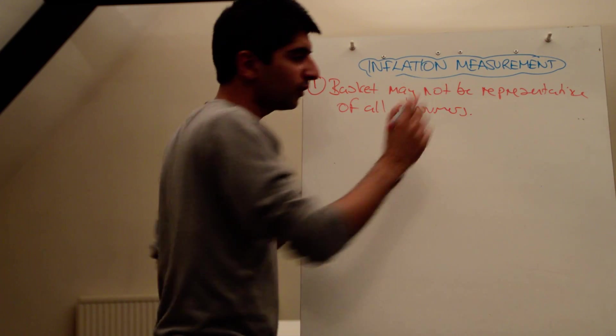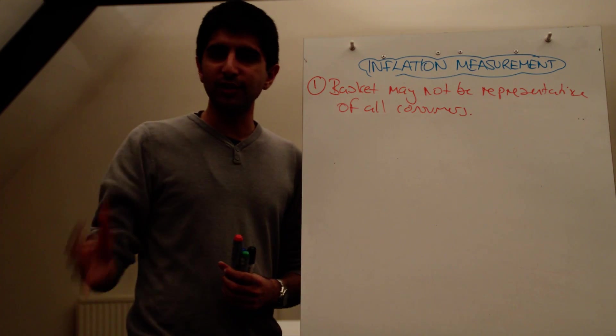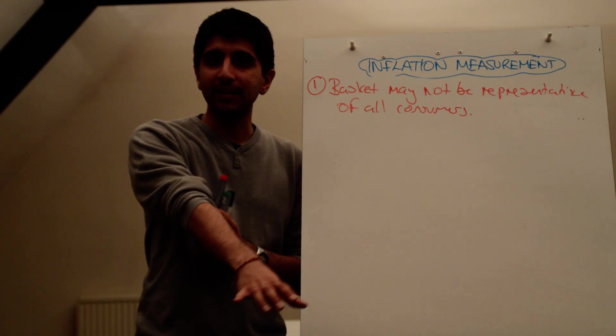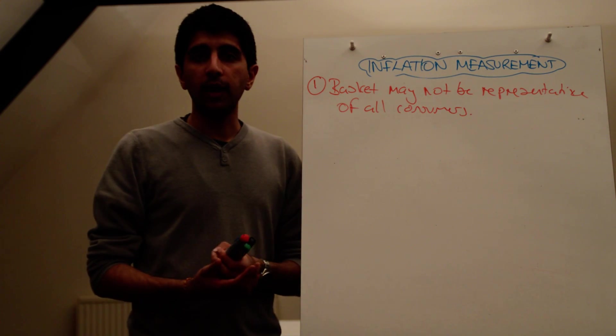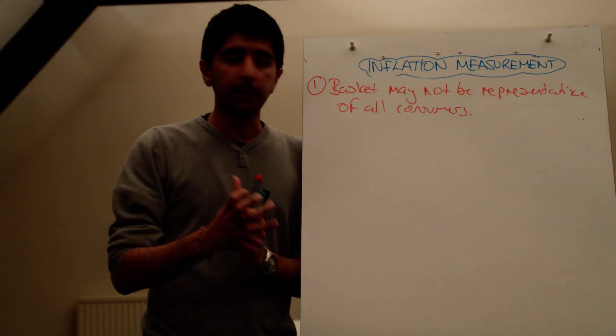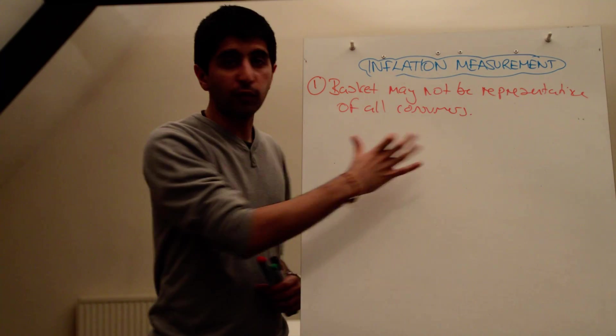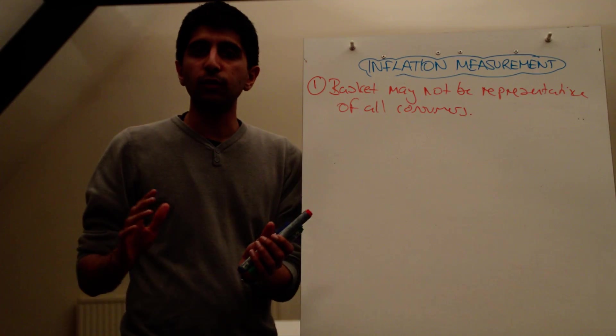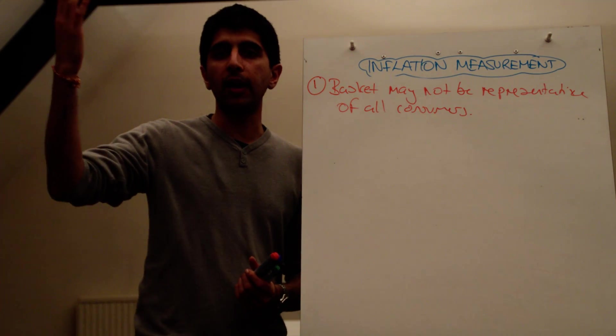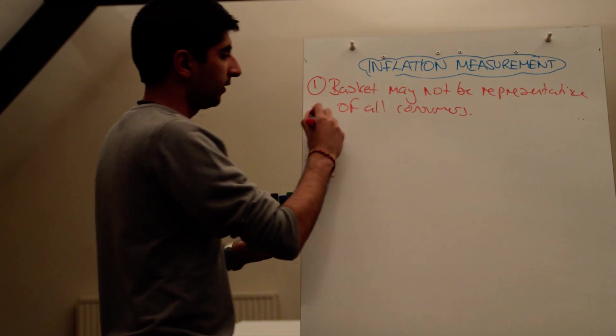So the 650 goods and services might be a good average, but it might not be specific to every individual in the economy. I might buy certain goods and services that are not included in that basket. I might buy goods and services that, for me, are a much greater percentage of my income than what's weighted in the basket. So the basket might not be representative of all consumers. So even though the inflation rate might be 2.5% for the economy, my personal inflation rate might be much higher or much lower. Each person's basket is different.